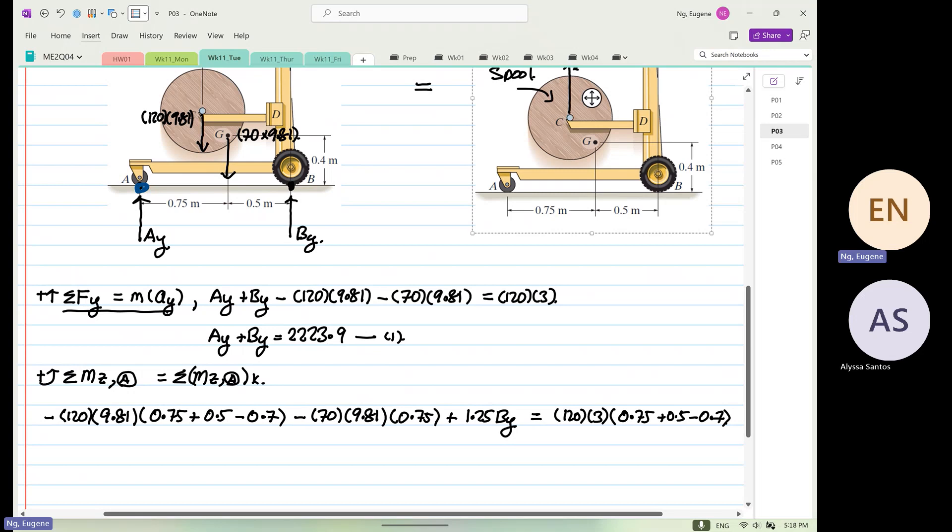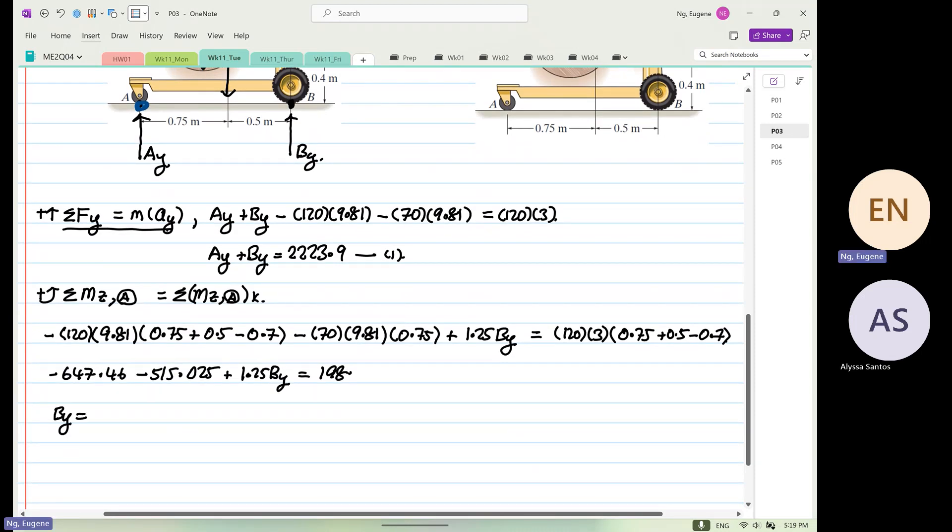So, you have 0.75 plus 0.5 minus 0.7, 1.25 times... minus 647.46, then minus 515.025, plus 1.25 By. And the whole thing will be equal to 0.75 plus 0.5 minus 0.7 times 120 times 3, which is 198. So, from here, By will be equal to 198 plus 647.46 plus 515.025 divided by 1.25, which is 1088.4.